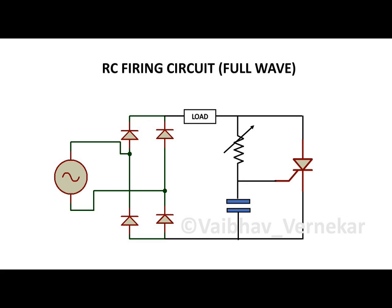RC firing circuit allows control of firing angle over a wide range in comparison to R firing circuit. The circuit includes 4 diodes in a bridge configuration in parallel with a series RC network and a thyristor. The power to the load is controlled depending upon the firing angle of the thyristor.